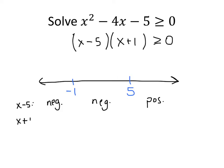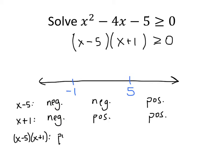Let's do the same thing for x plus 1. In the leftmost section, since x is less than negative 1, x plus 1 is going to be negative. But once we get past negative 1, x plus 1 is positive — positive in the middle section and also positive on the right. So what does that tell us about the product x minus 5 times x plus 1? In the leftmost section, that's the product of two negatives, which is positive. In the middle section, it's a negative times a positive, so that's negative. And in the rightmost section, it's two positives, so the product is positive.